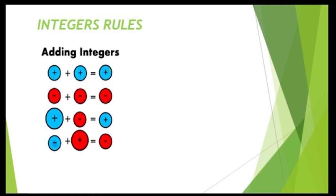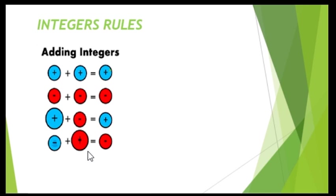Now, integer rules. There are 4 types of rules — this is a very important part. First: positive integer added with positive integer gives a positive result. Second: adding two negative values gives a negative value. Third: adding a positive with a negative gives a positive value. Fourth: adding a negative with a positive gives a negative value.